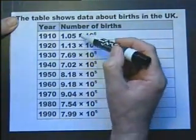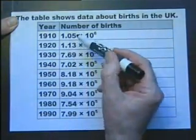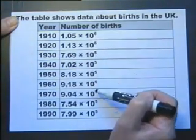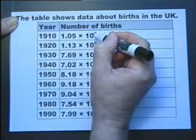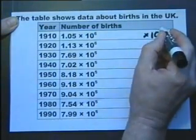At a quick glance it looks like these two are in fact the smallest years. But until we make these indices the same we can't compare them. So I need to rewrite these first two numbers as 10 to the power of 5.